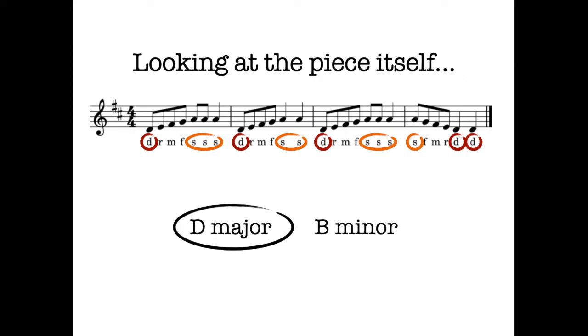Because if it had been B minor, we would have had to have seen la's and maybe me's in important places. And we don't really. There's zero la's. And there are some me's, but they're not as often and they're not in as important places. They're kind of just, we're kind of just passing through the me's in the tune.